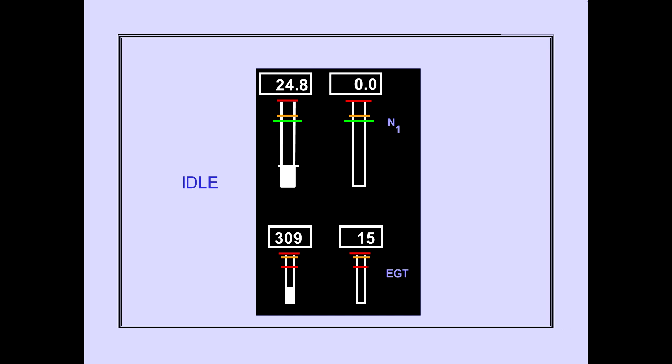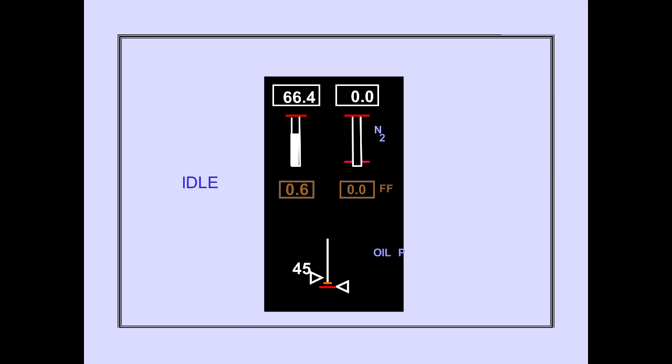N1 and EGT stabilize at idle. N2 RPM stabilizes at idle and oil pressure stabilizes in the normal range. The other engines are then started in the same manner.